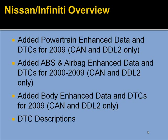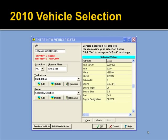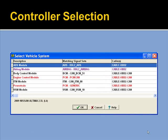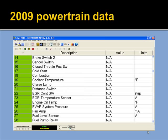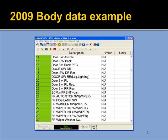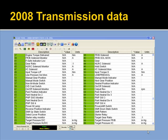For Nissan, we added powertrain enhanced data and DTCs for 2009 on the CAN and DDL-2 protocols. We went back and updated quite a bit of the ABS and airbag data and DTCs for 2000 through 2009. We added body data through 2009 as well as updated some of the DTC descriptions. Here's the vehicle selection screen. Controller selection for Nissan shows ABS, airbag, body, engine, and powertrain. An example of powertrain data on an Infiniti vehicle, 2009 body data, and a transmission data example on Nissan.